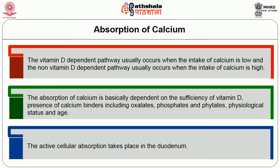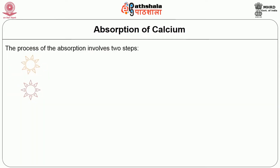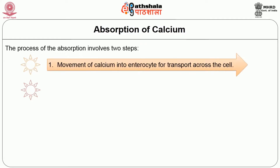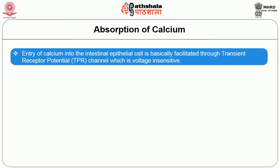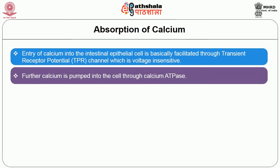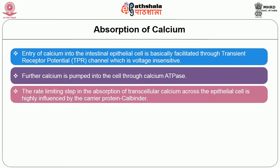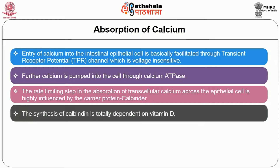Active cellular absorption takes place in the duodenum, and the process involves two important steps. The first step is the movement of calcium into the enterocyte for transport across the cell. The second step is the release of calcium to the extracellular fluid. Entry of calcium into the intestinal epithelial cell is facilitated through the transient receptor potential (TRP) channel, which is voltage insensitive. Calcium is pumped into the cell through calcium ATPase. The rate-limiting step in transcellular calcium absorption is highly influenced by the carrier protein calcitonin-binding protein (CaBP/Calbindin), whose synthesis is totally dependent on vitamin D.